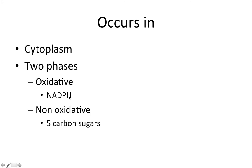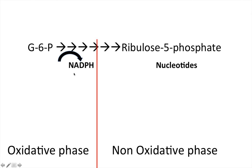NADPH is made in the oxidative phase, and the five carbon sugars are made in the non-oxidative phase. In the pentose phosphate pathway, you're starting off with glucose 6-phosphate. In the oxidative phase, we're going to be making NADPH. And then in the non-oxidative phase, we're going to be making ribulose 5-phosphate and the five pentose sugars that we use for nucleotides and DNA.